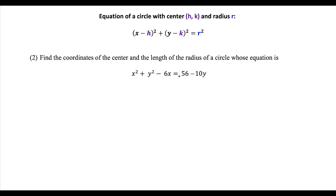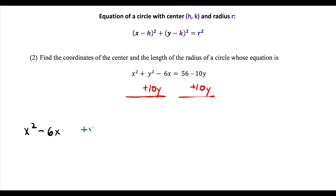Now a second example. This time we have the constant on one side but a y term on the right side, so we move it to the left by adding 10y to both sides. We group together x squared minus 6x, leave a space, plus y squared plus 10y, leave a space. The minus 10y and plus 10y cancel, leaving 56 on the right.